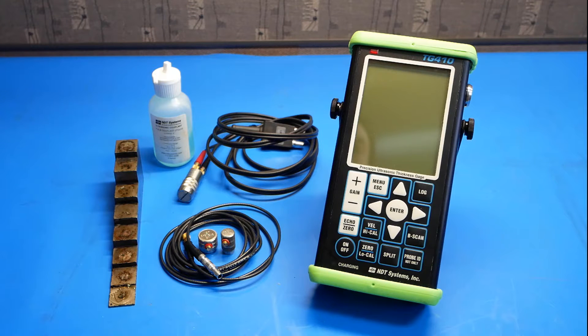Welcome to the NDT Systems TG410 setup video. In this video we will discuss how to set up the 410 to measure on a material using, in this case, a standardized steel test wedge. We will do this with three different kinds of probes. The first is a dual element contact probe, the second is a single element contact probe, and the third one is a single element delay line probe.